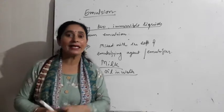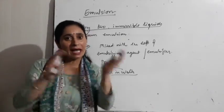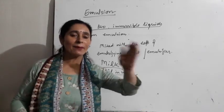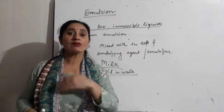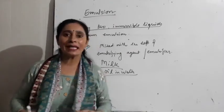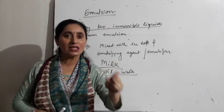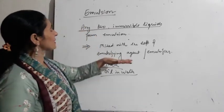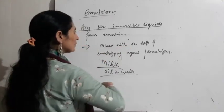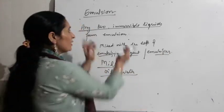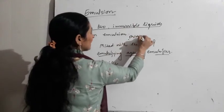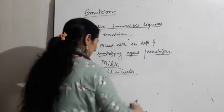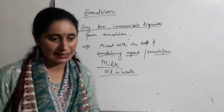Milk ke andar oil bhi hai, water bhi hai, lekin wo humein dikhai nahi deta. Jab milk se malaai banate ho, malaai se makhan, makhan se ghee — aap har cheez ko alag kar lete ho. Ye immiscible hain, to inko miscible karne ke liye, mix karne ke liye, stable karne ke liye, hum jo component add karte hain use emulsifying agent ya emulsifier kehte hain.